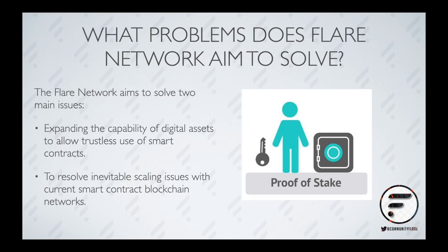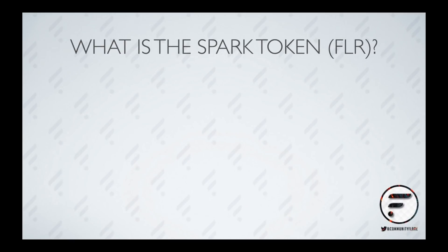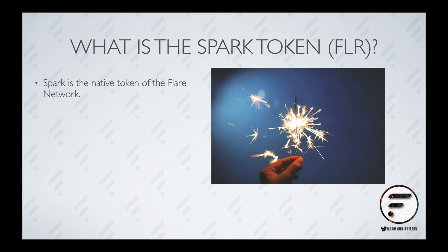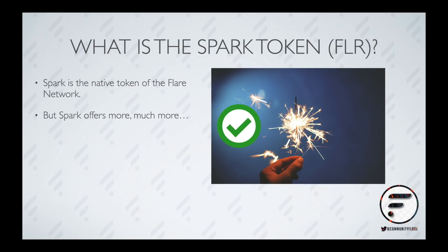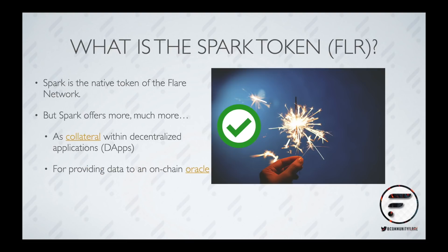Flare's consensus protocol doesn't require this and provides alternative uses for the native token, SPARK. SPARK is the native token on the Flare Network. Its base use case is similar to that of other native tokens — to prevent spam attacks. If transactions were free, spamming and congesting the network with useless transactions would also be free. But SPARK offers much more. In addition to the base use case, the SPARK token can be used as collateral with decentralized applications, for providing data to an on-chain oracle, or to participate in protocol governance.